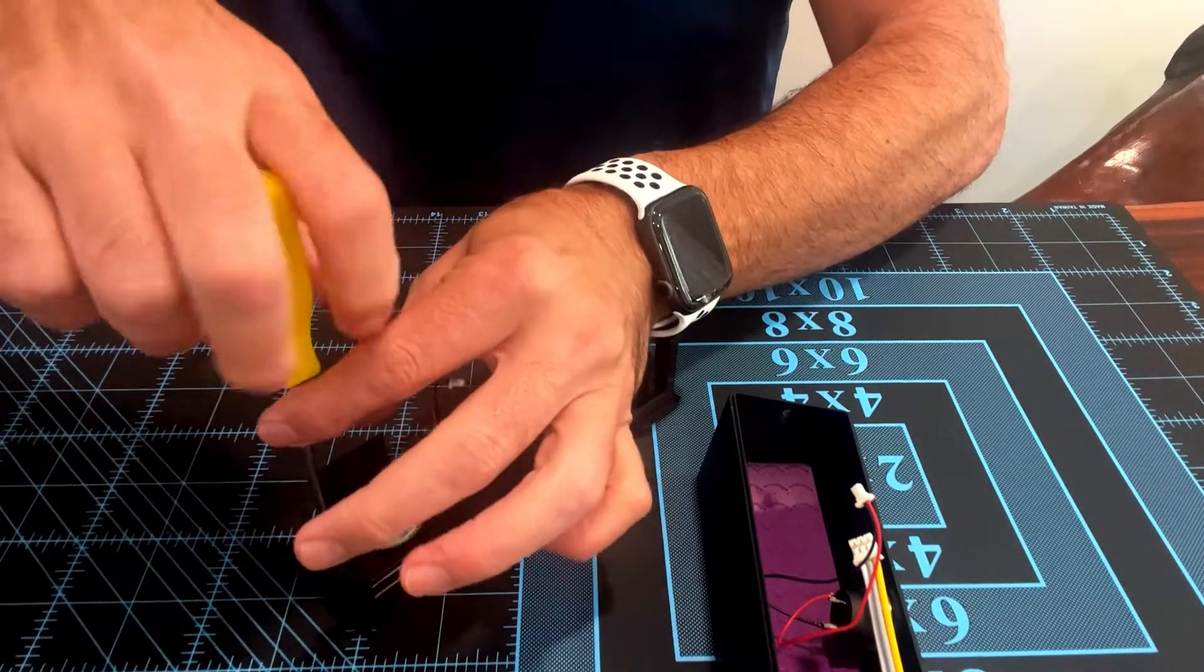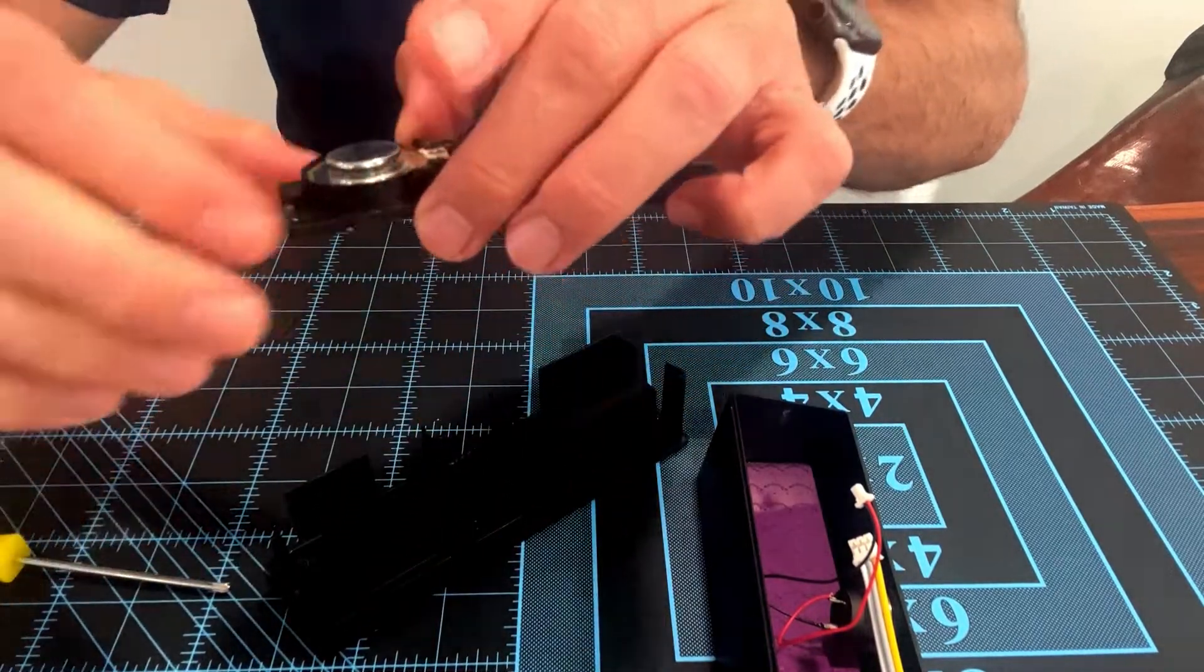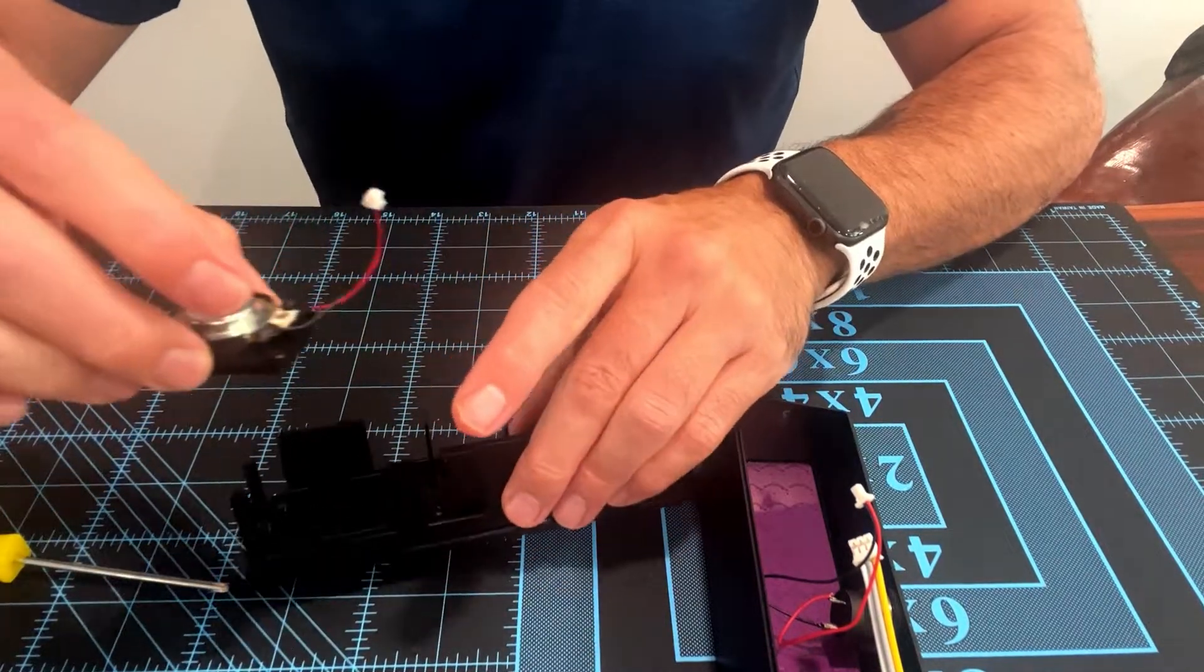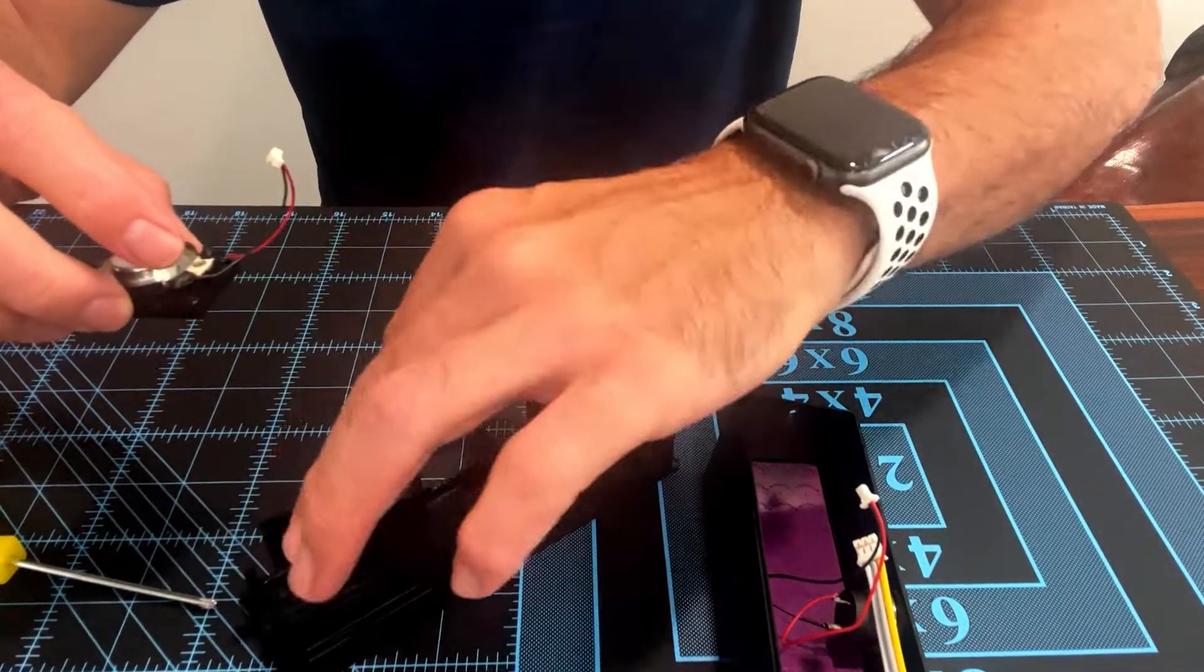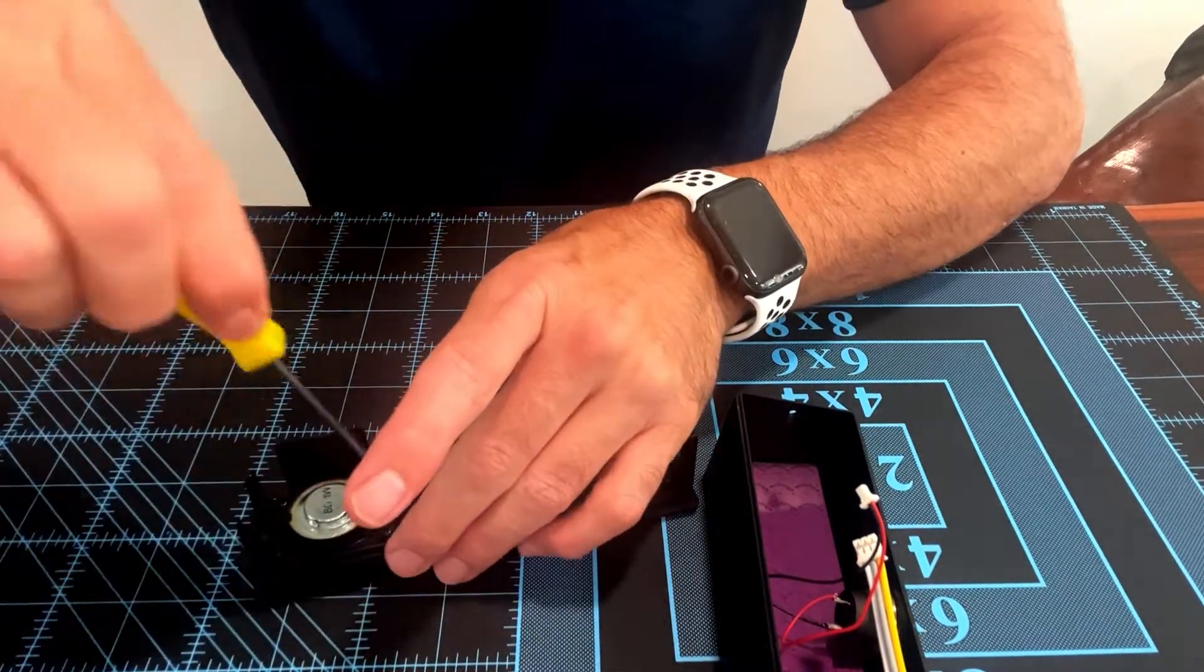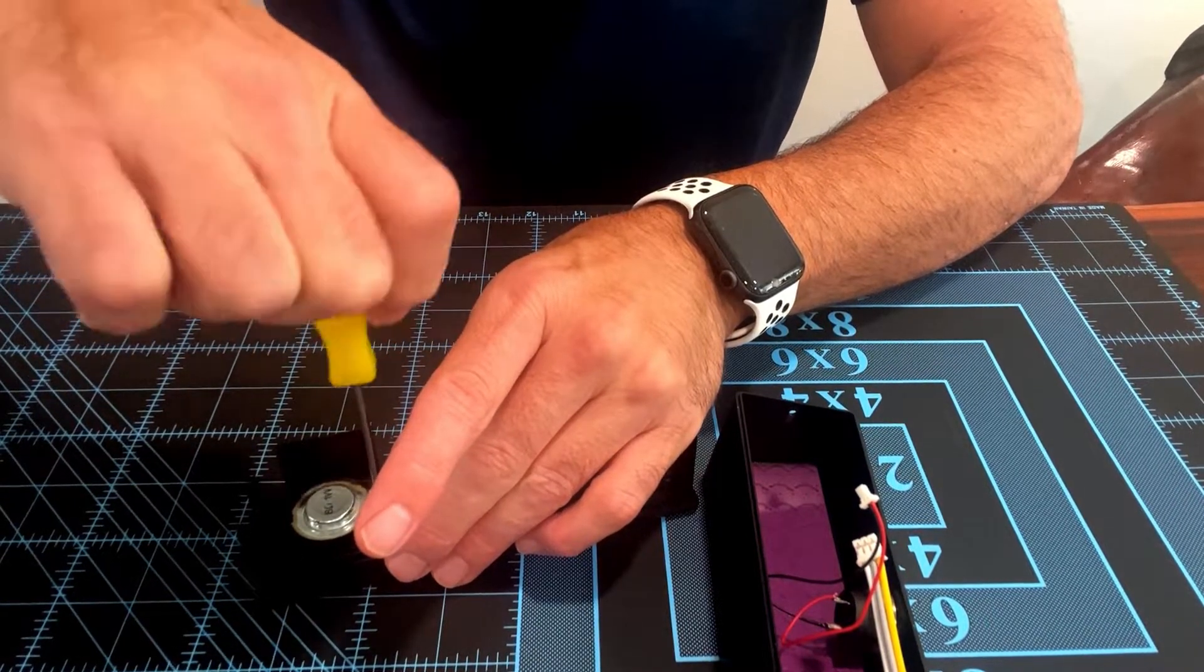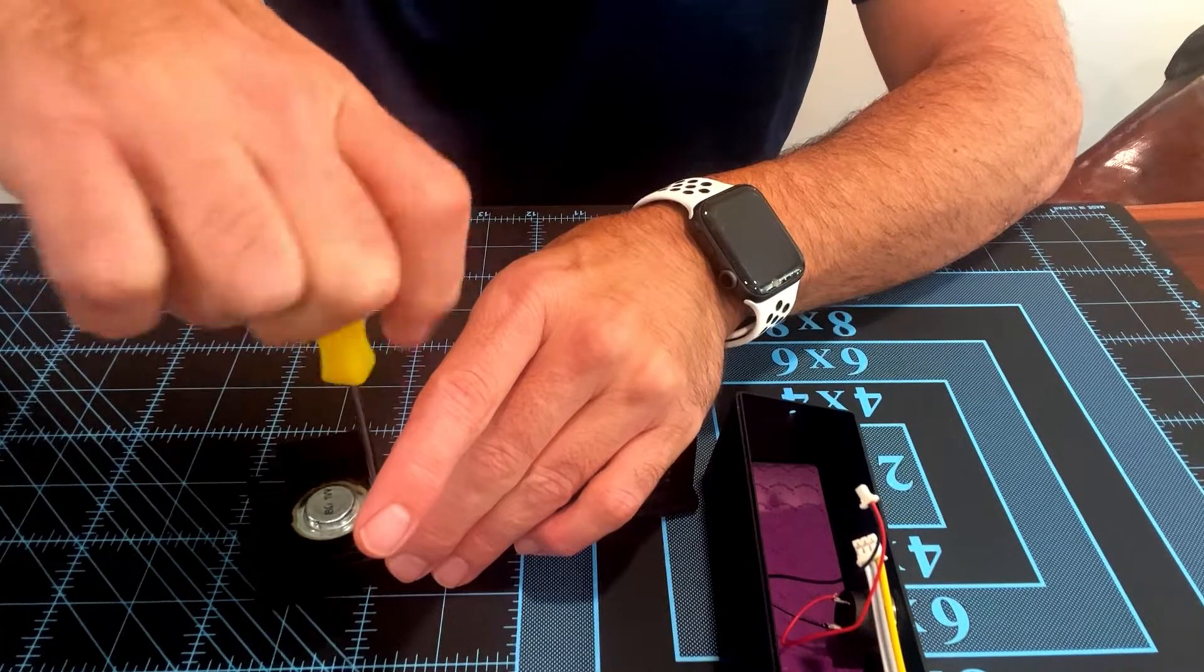And then the speaker will lift right out. It doesn't matter which two corners you use, just make sure they're opposite. So I will go ahead and screw the speaker back in, and all the screws just need to really be hand tight. You don't have to over-tighten these.